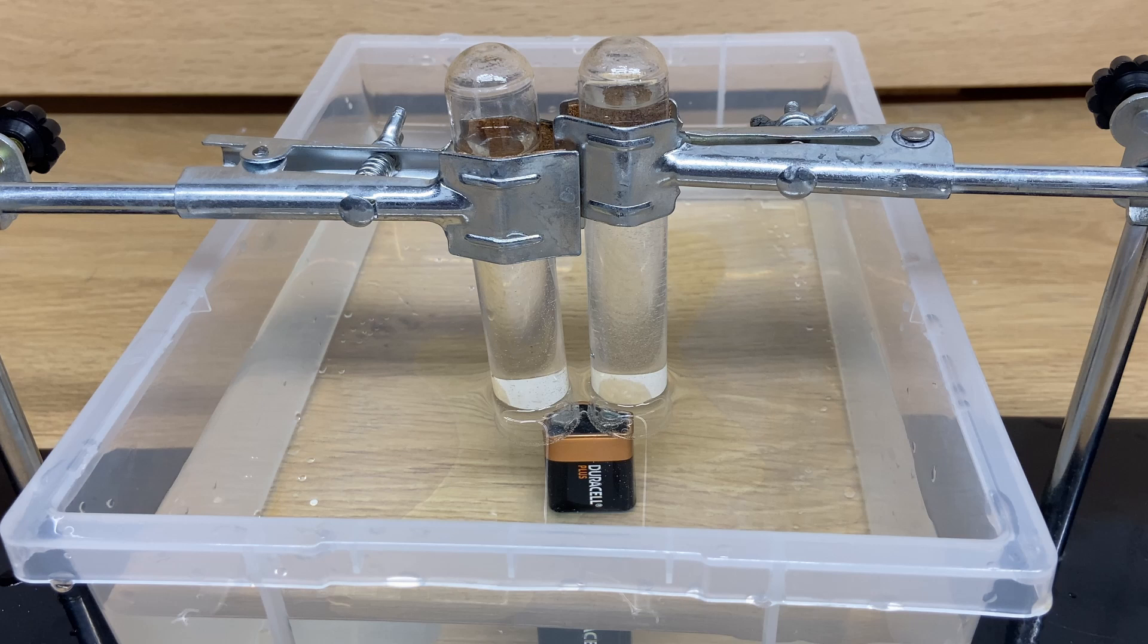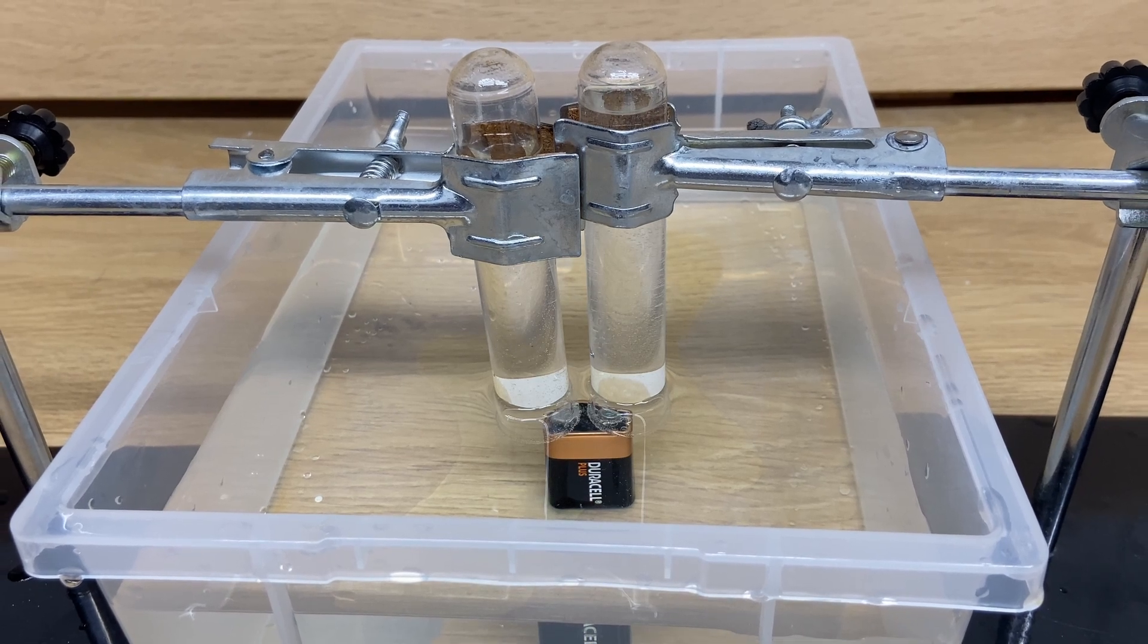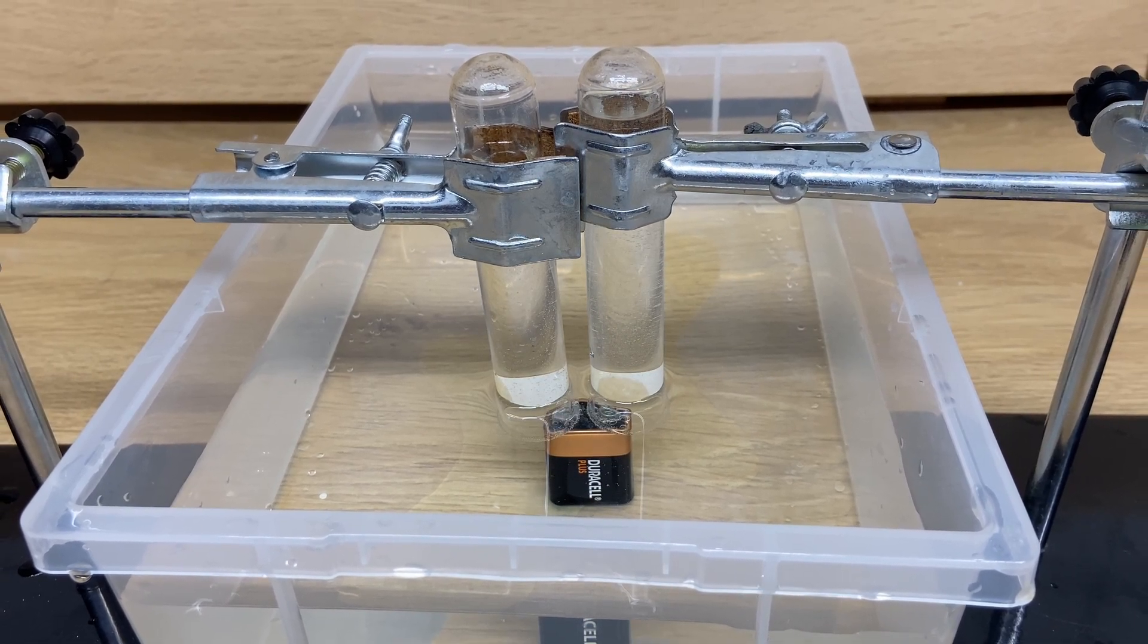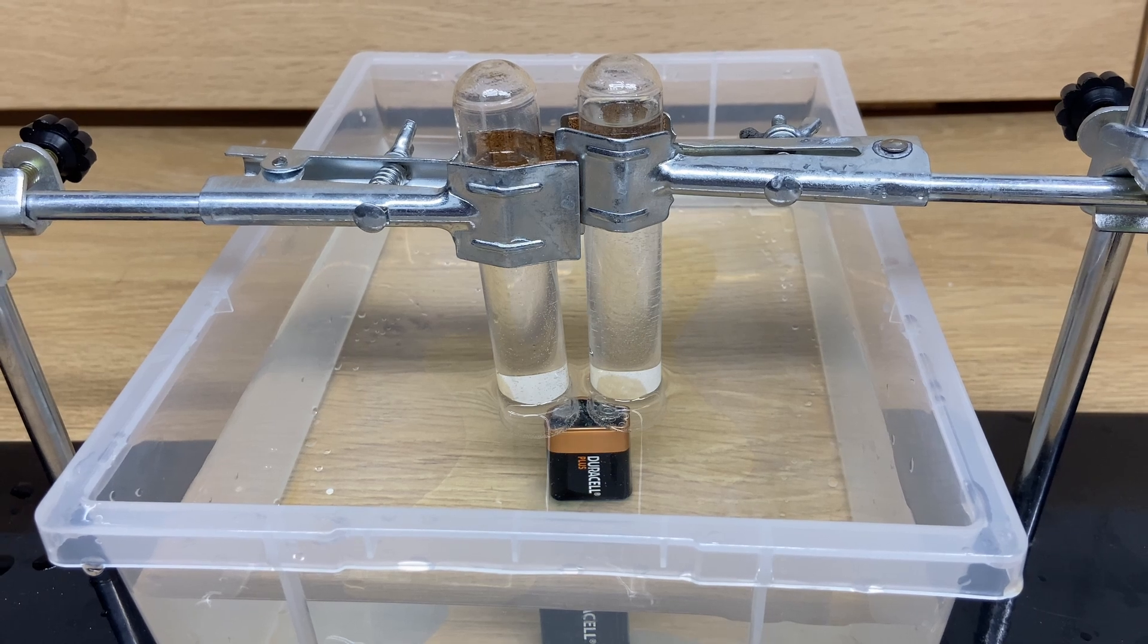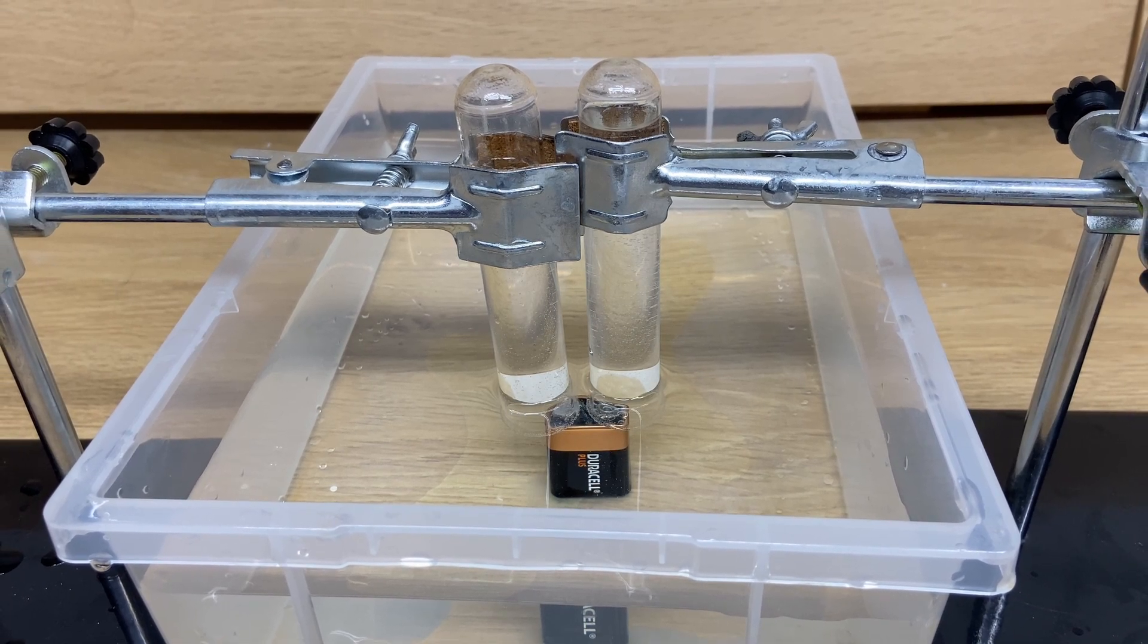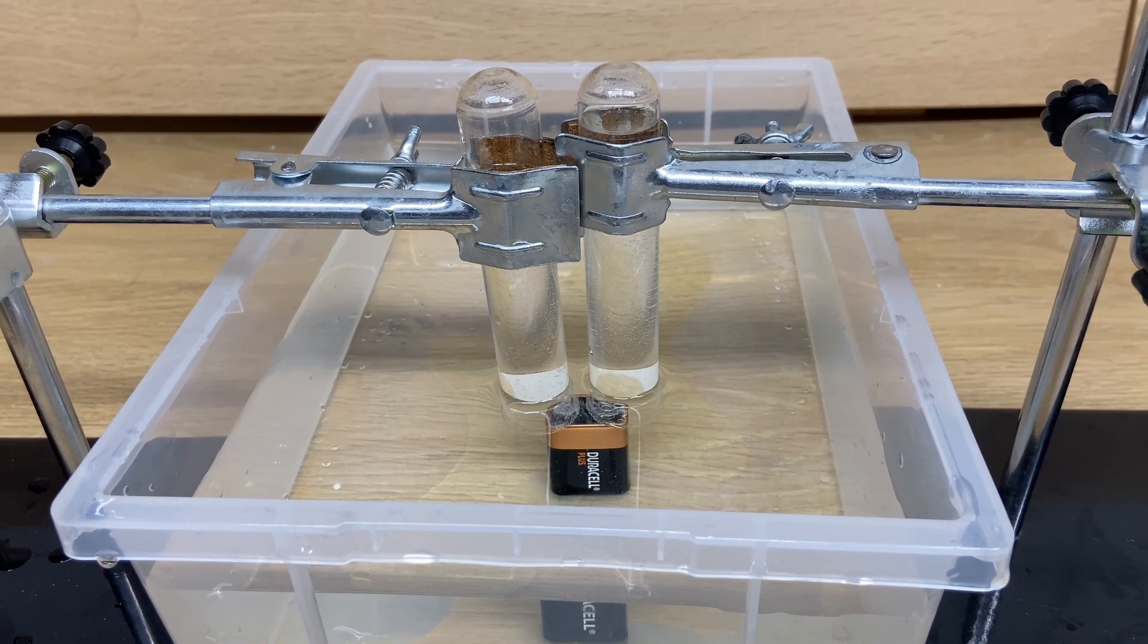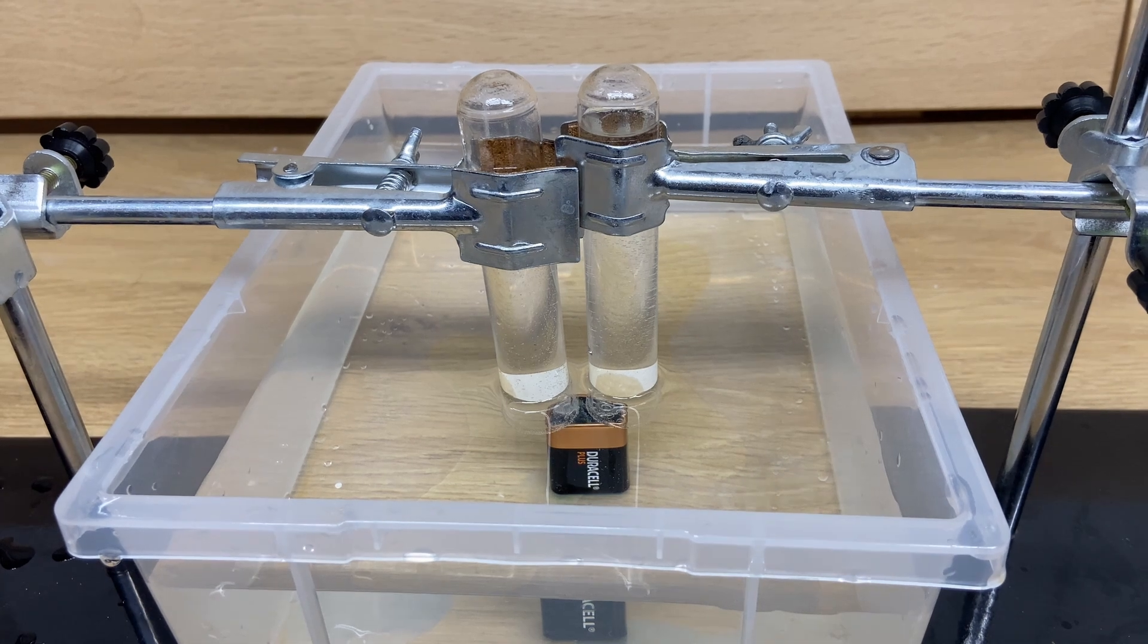As soon as I place the battery you will see that on both sides bubbles will start to come from the battery. On the minus or anode side of the battery the bubbles will be hydrogen. And on the plus side or cathode side of the battery the bubbles will be oxygen.